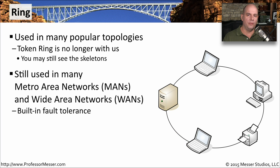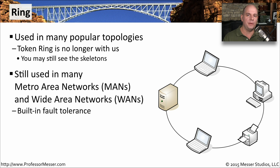We often think of ring topologies as those older style networks, like the older token ring networks. Although we don't see token ring networks much any longer, we still use ring topologies for wide area networks. A good example would be SONET, where you can build a redundant ring SONET network in a geographical area. SONET networks work by sending exactly the same information down both sides of the ring, so if you have a break anywhere along the way, that information can make its way by going the other direction on the ring.